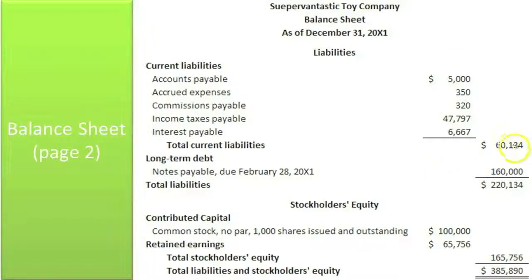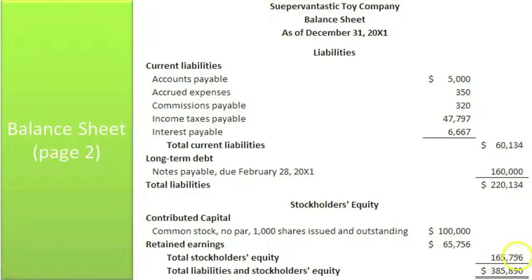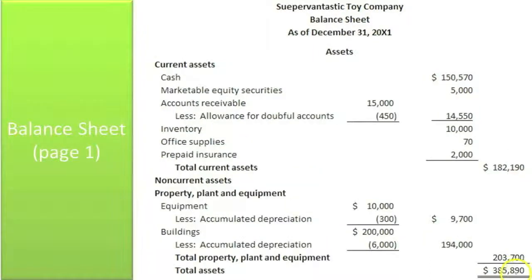All of our current liabilities added up to 60,134. Long-term debt is 160,000, so our total liabilities are 220,134. Here's the common stock and retained earnings from the statement of shareholders' equity. To get total stockholders' equity: 165,756. If you add your total liabilities and your total stockholders' equity, you get total liabilities and stockholders' equity of 385,890. Looking back on the assets, 385,890 — the balance sheet balances, which it should because our adjusted trial balance balanced. It appears we've done that properly.